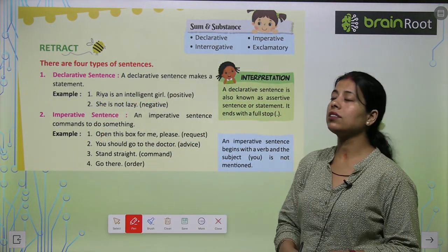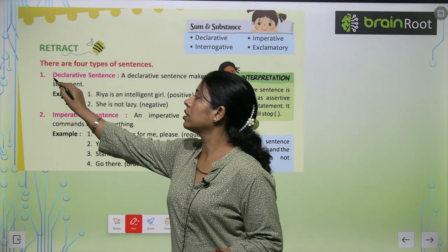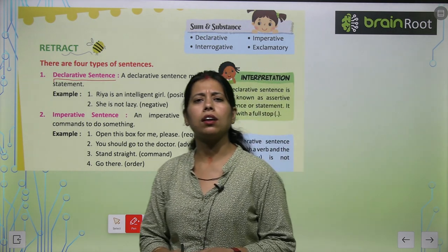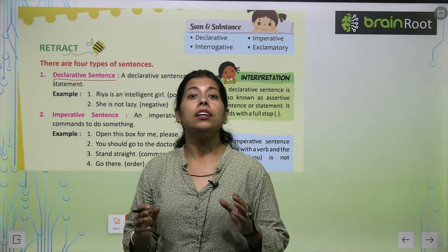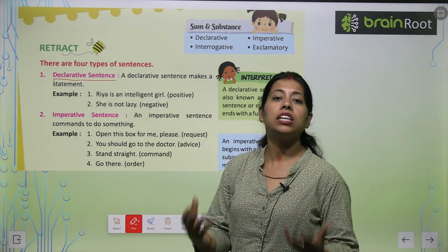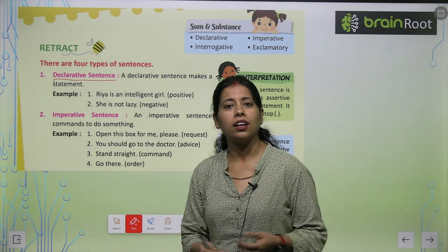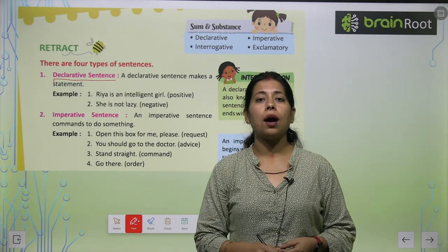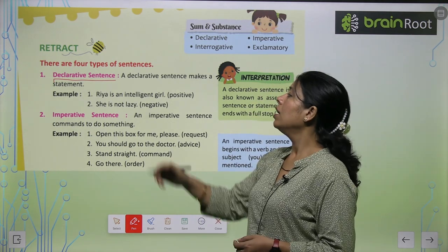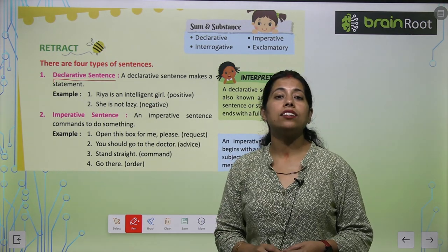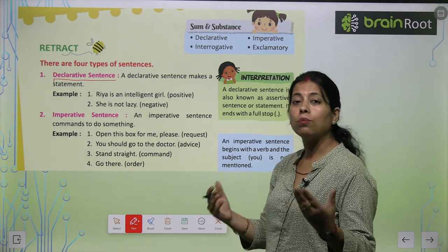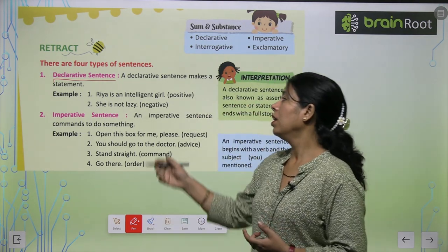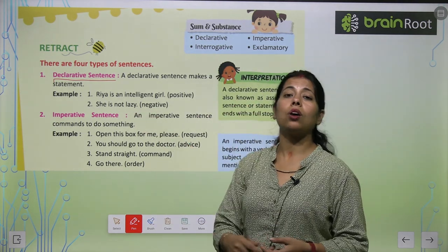The first type is the declarative sentence. The name itself tells us — declarative means you can declare something. For example: 'Ria is an intelligent girl.' Another example: 'She is not lazy.' These are declarative sentences.